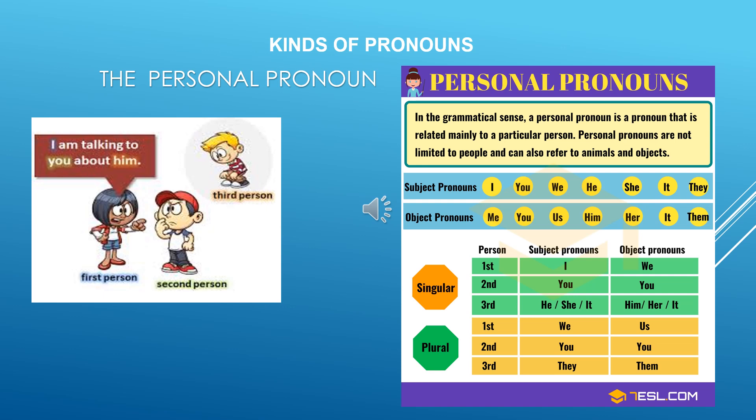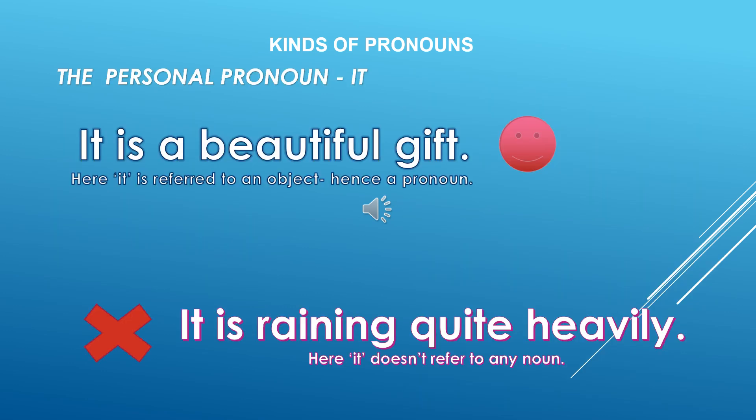Now let us look at the plural. First person plural is we — it's not I anymore, it's we. Second person plural is still you, because even you can refer to one person or a group. When there are three people in front of you, you can also refer to them as you — we don't say 'you all', that's wrong students, we just say 'you' or 'all of you'. Third person plural is they.